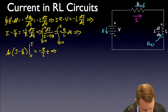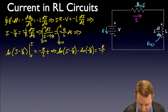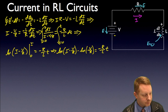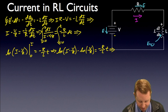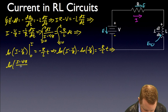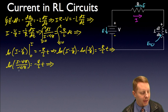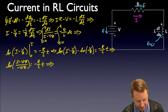Substituting in our variables on the left-hand side, this implies that the natural log of (I minus V/R) minus the natural log of (minus V/R) must equal minus R/L times t. So that implies that the natural log of (I minus V/R) divided by (minus V/R) equals minus R/L times t. Now it just becomes a matter of rearrangement — raising both sides as an exponent of e, the e and natural log cancel, leaving what we have there.